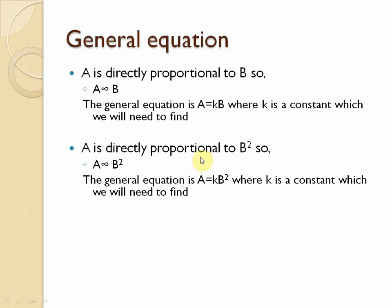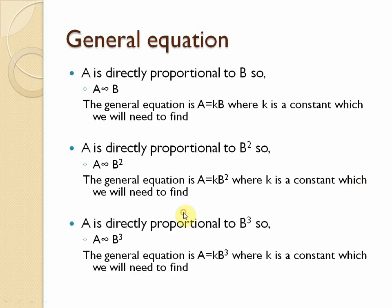If a is directly proportional to b squared, the general equation is a = kb². If a is directly proportional to b cubed, the equation is a = kb³. Whatever power the variable has — b², b³, square root of b, cube root of b, b to the power 4 — you just include that in the equation. The main thing is k, so we have to find the value of k first.